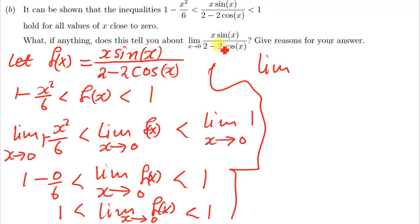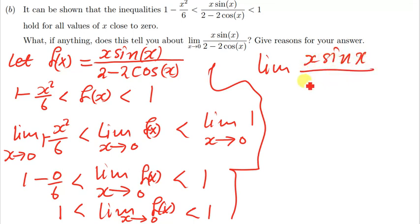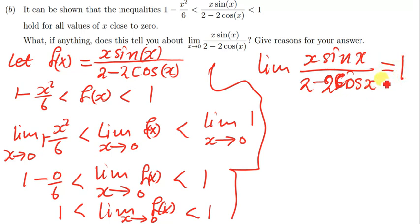So what does this tell us? It tells us that the limit of f(x) — where f(x) is x·sin(x) over 2 minus 2·cos(x) — as x approaches zero, is simply equal to 1. This is what the inequality tells us, and the mathematical work shown here is the reason.